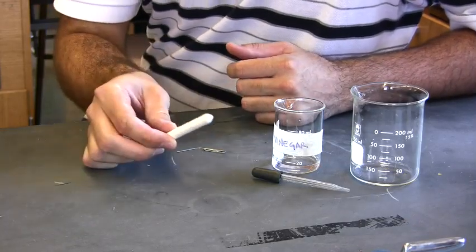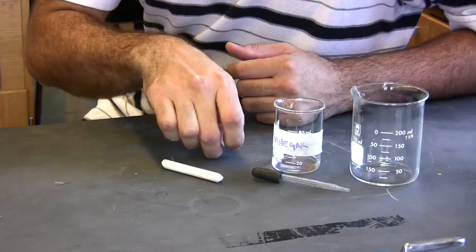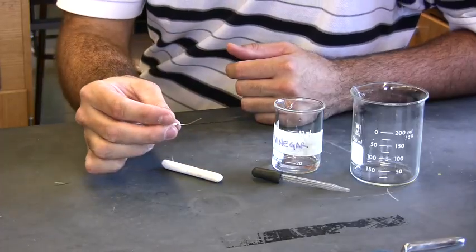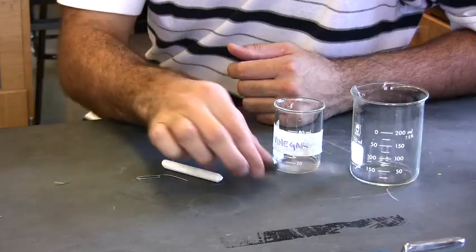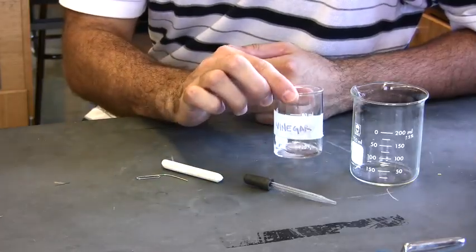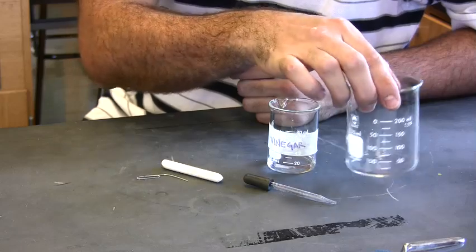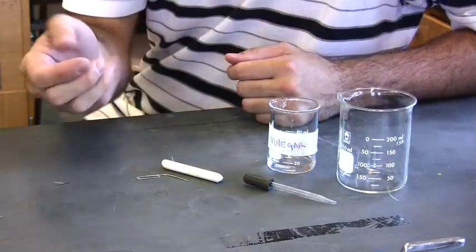All right, so what you're going to need for this experiment is a piece of chalk, a paper clip or something sharp that you can scratch the chalk with, eye dropper, some vinegar, and a container. I'm using a beaker. You can use something as simple as a cup.